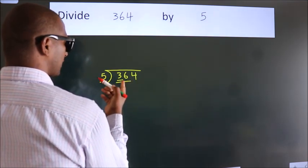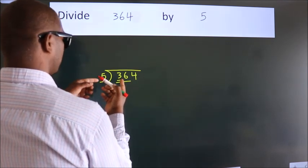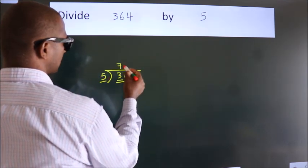36. A number close to 36 in the 5 table is 5 times 7 equals 35.